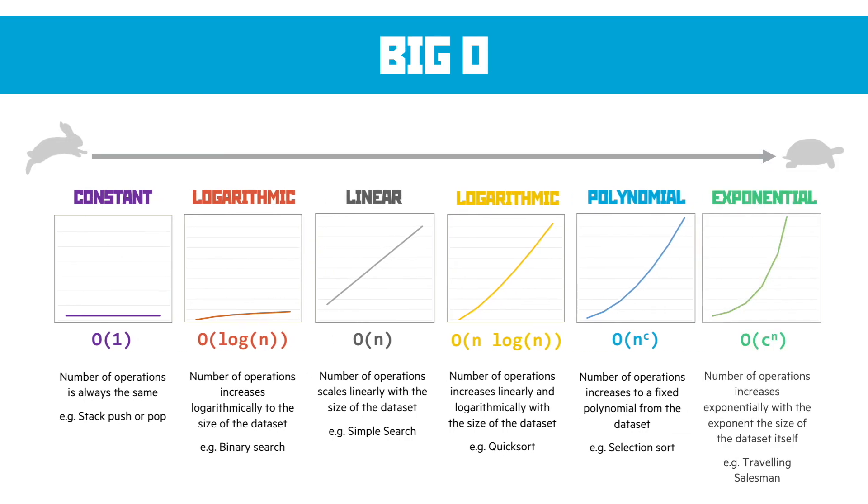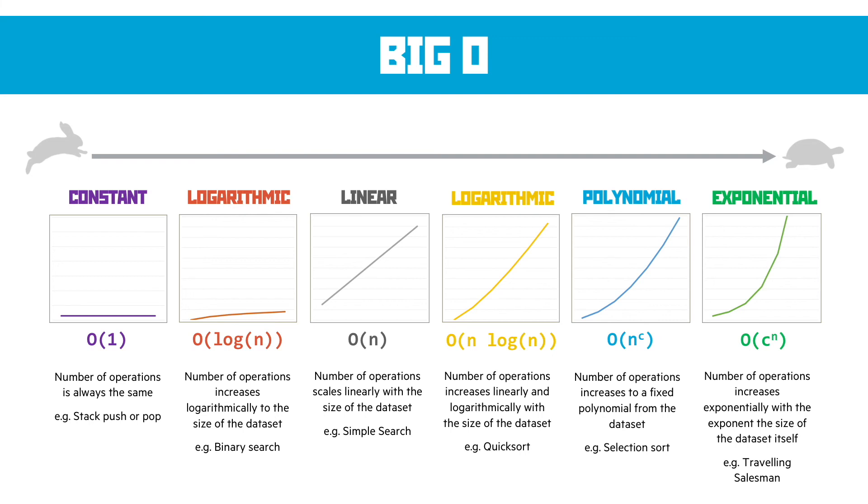Now the very worst case scenario, which we want to avoid at all costs, is exponential, where the size of the data set is actually the indice. And this is where the number of operations increases exponentially, with the exponent size of the data set itself. The travelling salesman problem, which isn't in your specification, but is a classic computer science problem. Give it a search, it'll be very interesting for you, I promise. It's one of these exponential problems. And as we increase the data set by one, the size increases enormously.